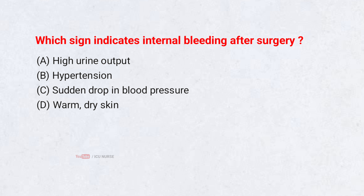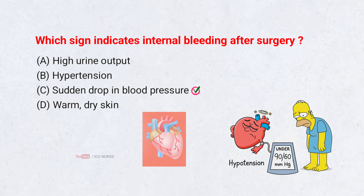Which sign indicates internal bleeding after surgery? A. High urine output. B. Hypertension. C. Sudden drop in blood pressure. D. Warm, dry skin. Correct answer: C. Sudden drop in blood pressure. A sudden fall in blood pressure with tachycardia suggests blood loss and possible internal bleeding.